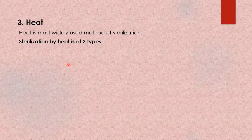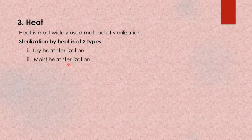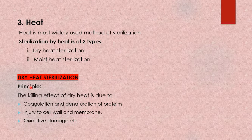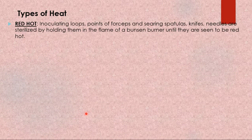Heat is the most widely used method of sterilization, and it is of two types: dry heat and moist heat sterilization. The principle behind dry heat is coagulation and denaturation of proteins, injury to the cell wall and cell membrane, and oxidative damage.